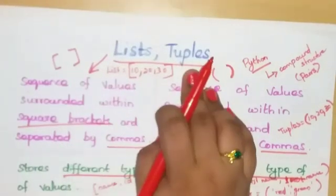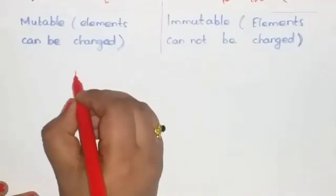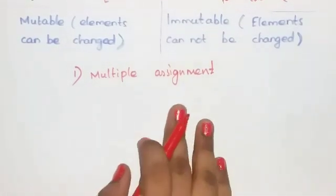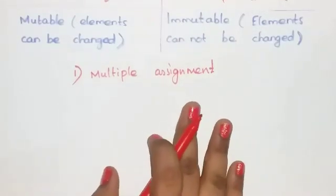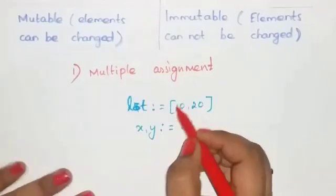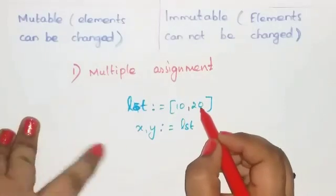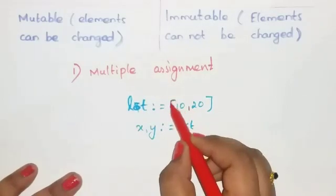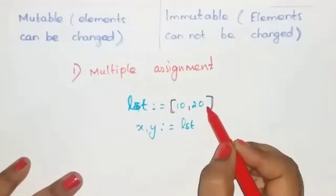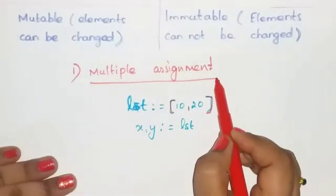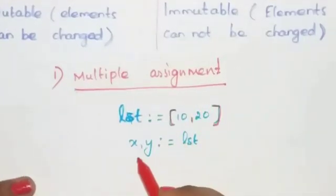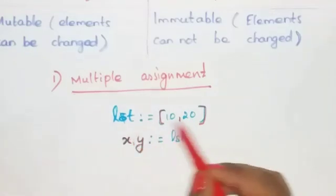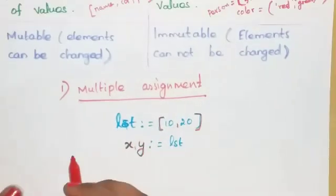Lists and tuples can be accessed in two ways. The first way is multiple assignment. In this method, elements are stored in your list and each element is bound to a different name. For example, given a list [10, 20], x will be assigned 10 and y will be assigned 20.